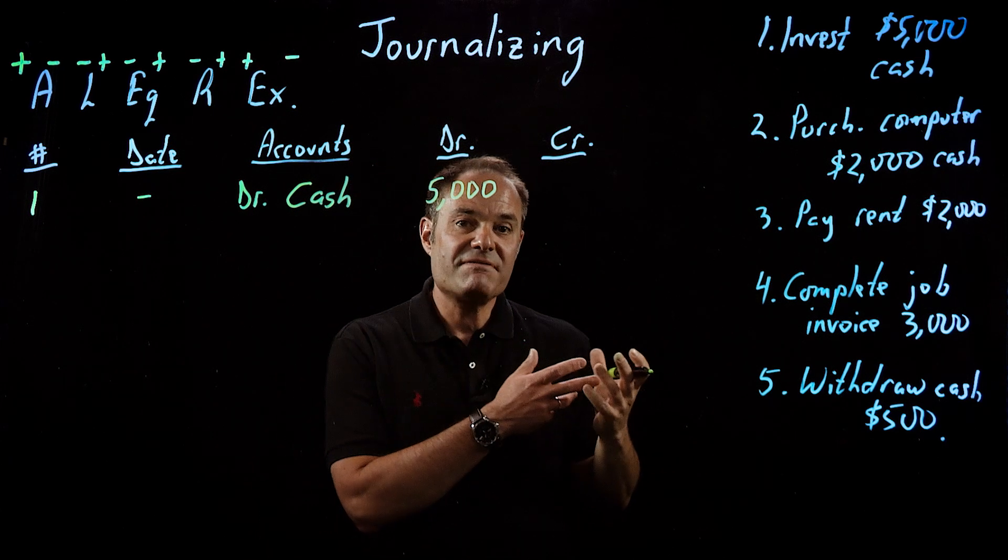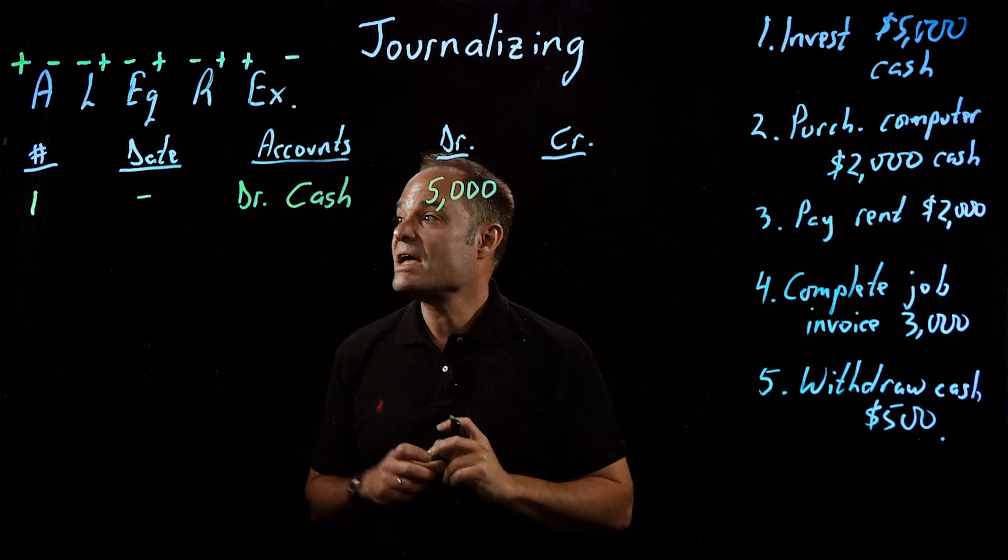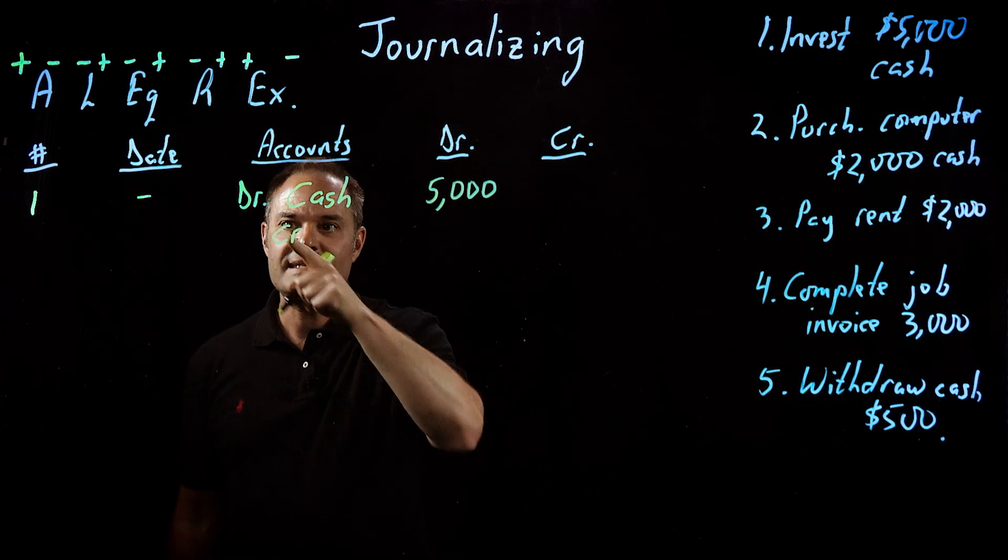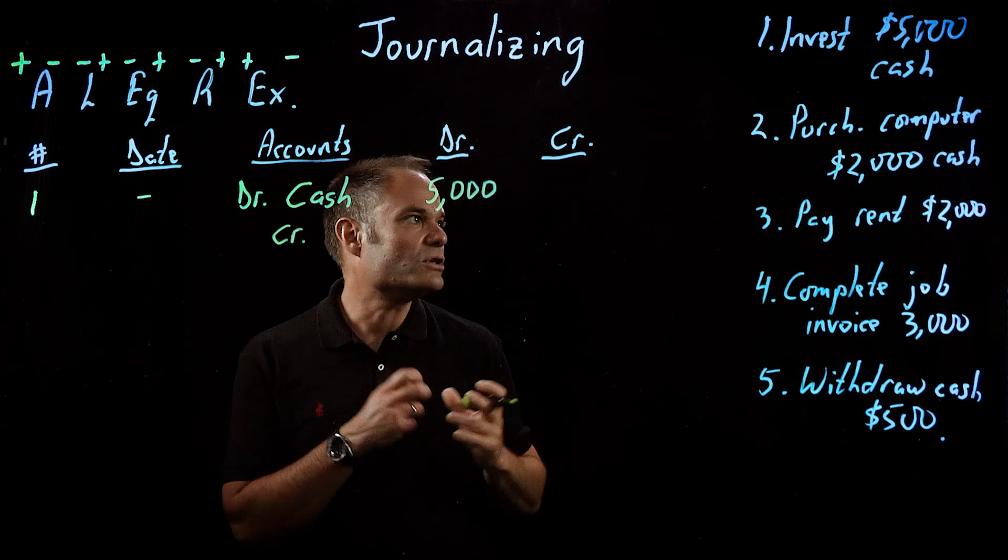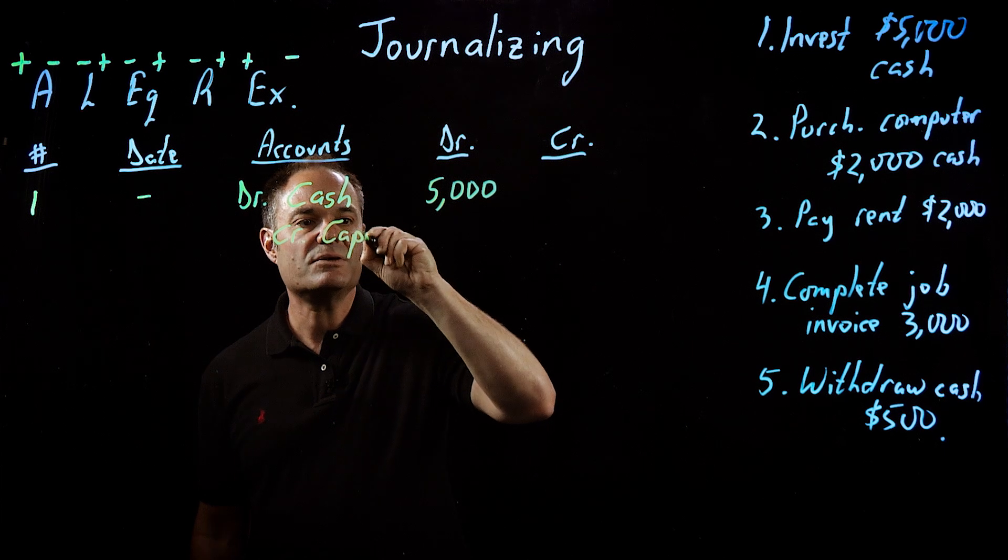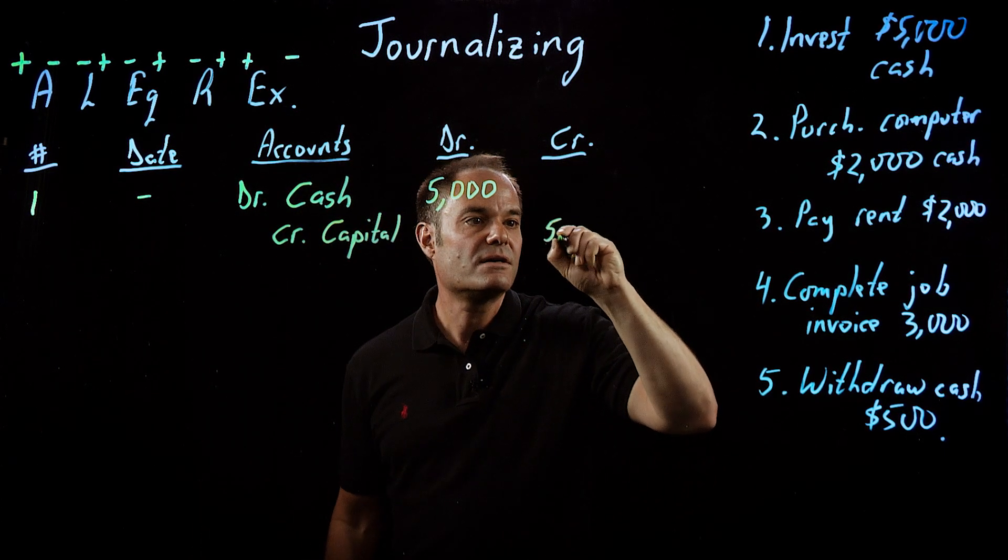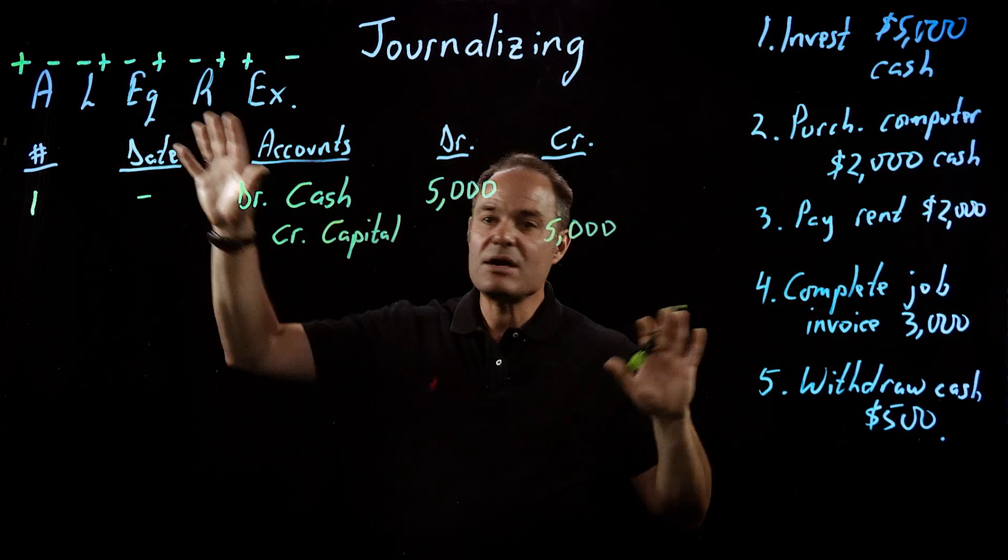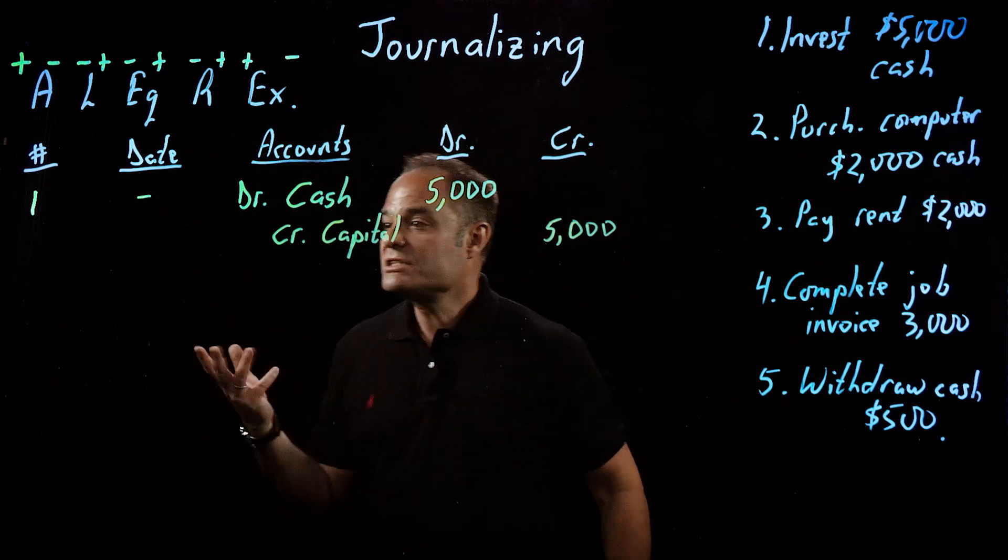I'm going to debit cash, and I'm going to record that under the debit column, $5,000. Then the second half of the transaction, because remember, it's double entry accounting, so we need a debit equal to a credit. The second half is I'm going to credit, and notice that when I write my credits, I indent them a little bit to make it more visually appealing and easier to keep track of. I'm going to credit capital. That was the account that we used last time, and that goes in the credit column. My debits equal my credits. I don't have to check back with my accounting equation. I know that everything's in balance.